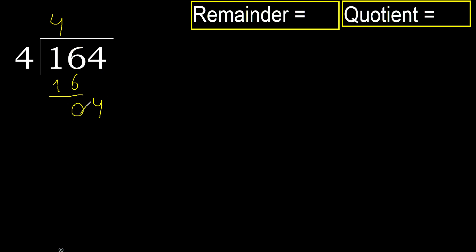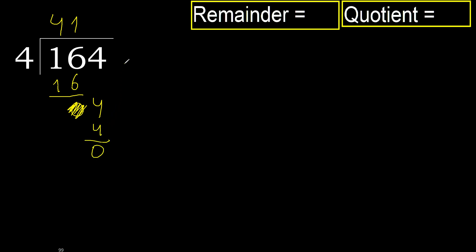Next, eliminate 0 on this side. 4. 4 multiply by 1 is 4, is not greater. Subtract 0. Next, that is not a number, therefore finish it.